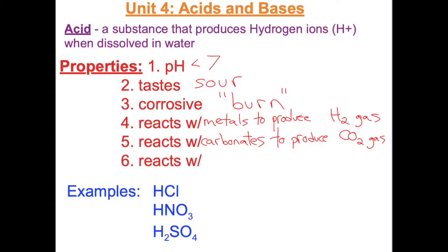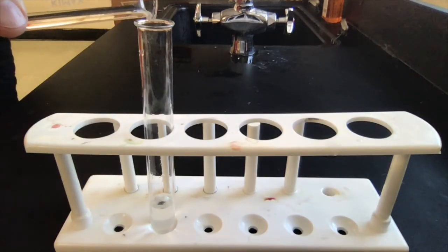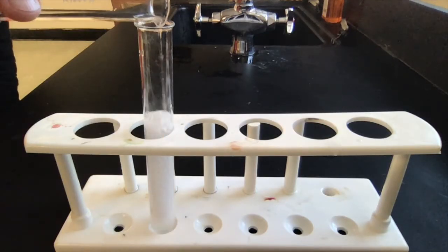They also react to a family of chemicals called carbonates to produce carbon dioxide. Here, citric acid reacts to sodium carbonate, and the bubbles are CO2 gas.